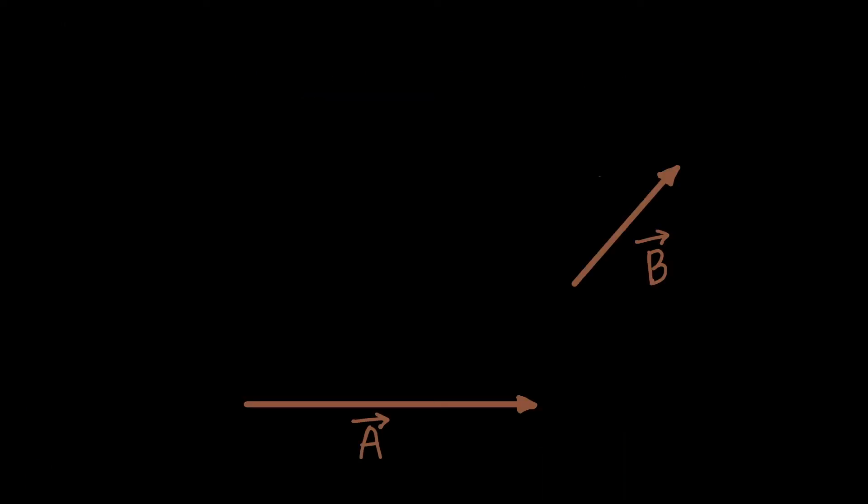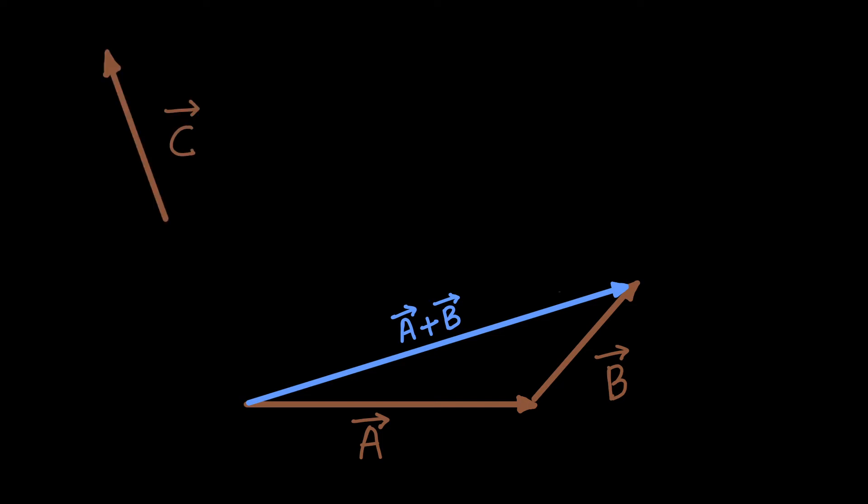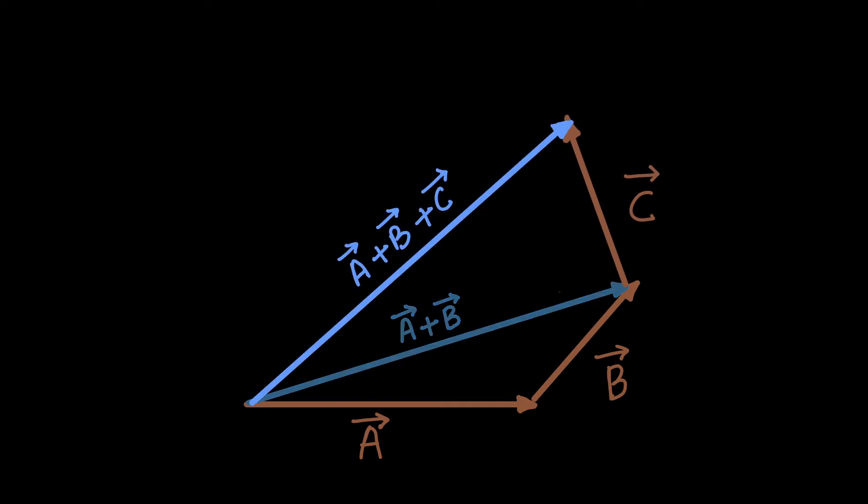Suppose we have two vectors, we place the tail of one vector on the head of the other. Then the resultant vector will be a vector joining the tail of vector a to the head of vector b. If we put the tail of vector c on the head of the resultant vector, then this will be our new resultant vector. This is the triangle law of vector addition.